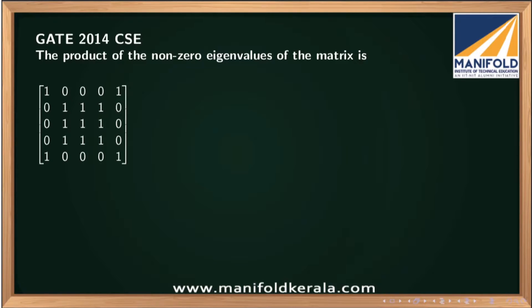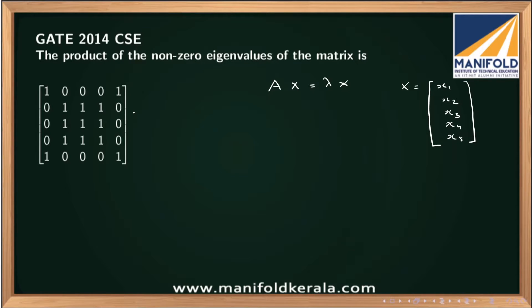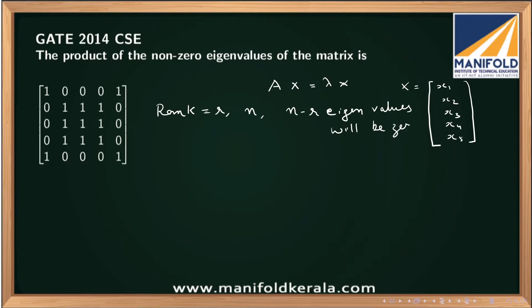To solve this problem we need some fundamental knowledge about eigenvalues. First, if you have a matrix A and eigenvector x, then Ax = λx, where x is a column vector [h1, h2, h3, h4, h5]. Second, if the rank of a matrix is r and the order is n, then there will be n minus r eigenvalues equal to zero.